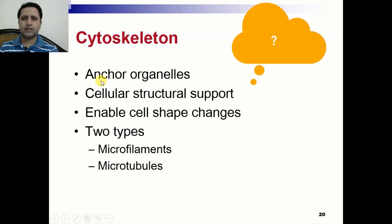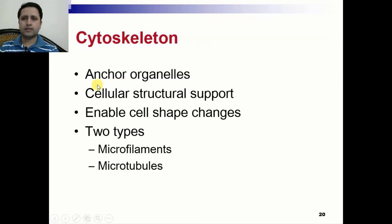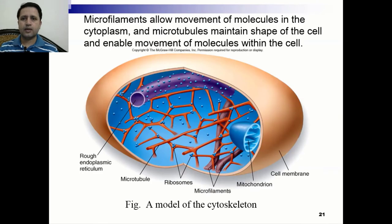So what is cytoskeleton? Cytoskeleton is the structure — the skeleton present in the cell cytoplasm — and it helps in anchoring organelles. It helps in cellular structure support and also helps in enabling cell shape and changes. There are two types of cytoskeleton: one is microfilaments and the second one is microtubules. Microfilaments allow the movement of molecules in the cytoplasm, and microtubules maintain the shape of the cell and enable movement of molecules within the cell.